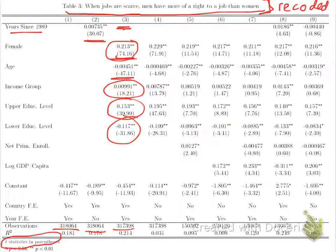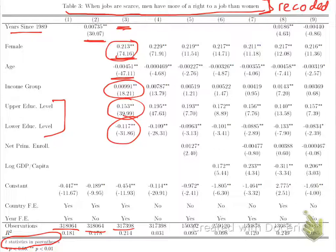The lower your education level, the more you're likely to think that men should have the job. Wouldn't it be interesting to interact education levels with male and female? We might imagine that higher-income females might be more traditional than lower-educated females. That certainly could be a hypothesis we could test by looking at the coefficient on the interaction term between female and level of education.